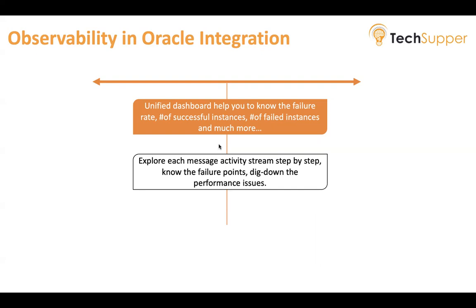You can explore each message's activity stream step by step. For any message in your integration, you can look at what actions were executed, at what time and date, step by step. If you have enabled the payload — such as debug or development mode — you can also find the payload to look at failure points and dig into performance issues by looking at the time difference between two actions.